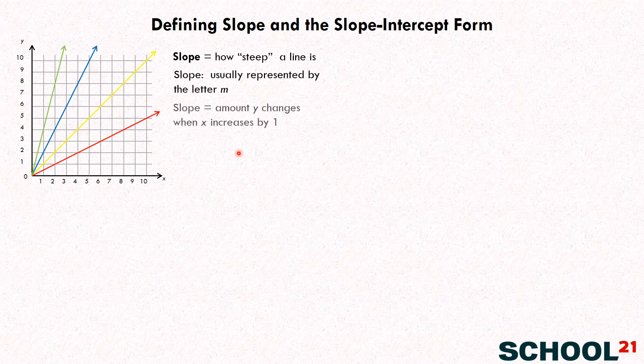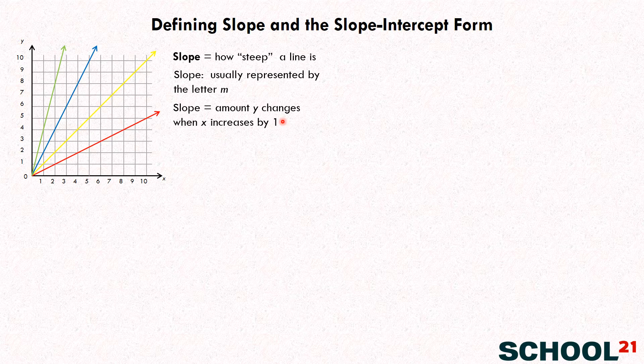What it is, it's the amount that Y changes when X increases by one. So let's look at this line right here. You can see between this point and this point, X is increasing by one. Can you see that? Yeah. So now how much does Y increase? When X increases that one, how much is Y increasing? Two.